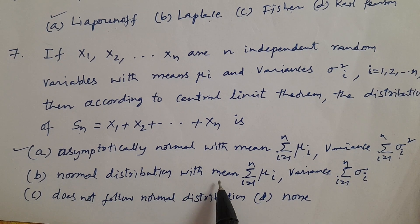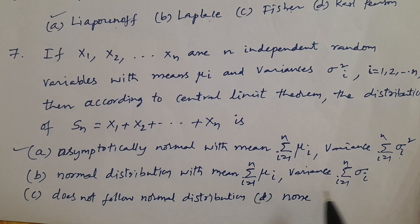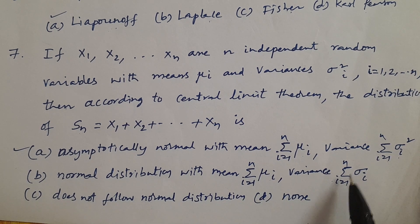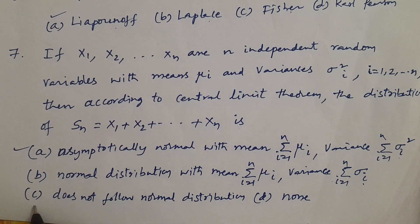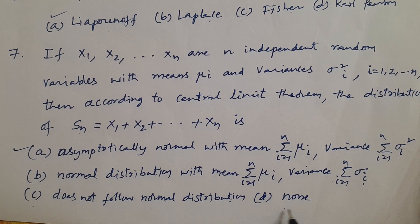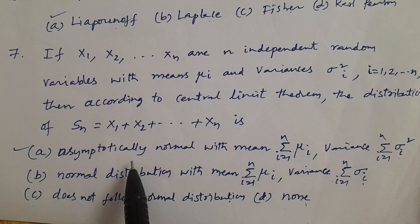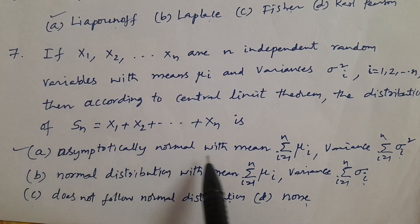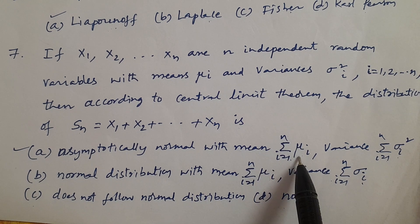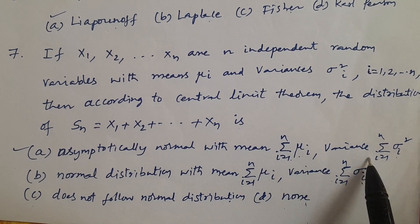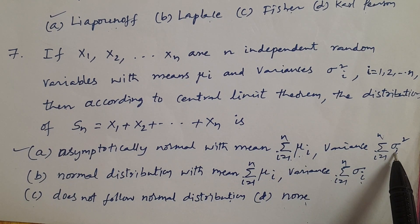Option A: Asymptotically normal with mean Σᵢ₌₁ⁿ μᵢ and variance Σᵢ₌₁ⁿ σᵢ². Option B: Normal distribution with mean Σμᵢ and variance Σσᵢ². Option C: Does not follow normal distribution. Option D: None of the above. The answer is A — asymptotically normal with mean Σᵢ₌₁ⁿ μᵢ and variance Σᵢ₌₁ⁿ σᵢ².